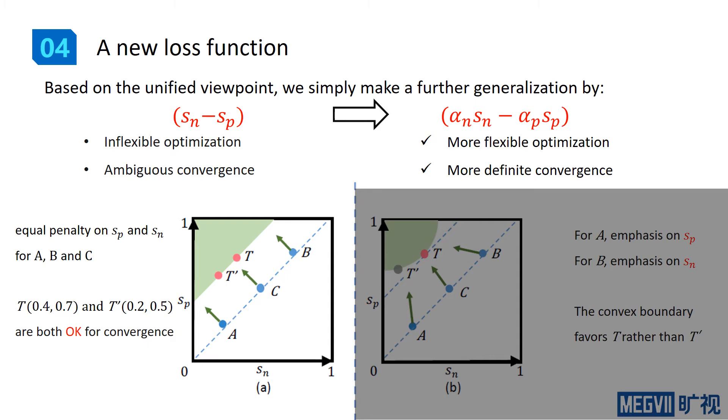Before convergence, the penalty on both s_p and s_n are restricted to be equal, which lacks flexibility. Upon convergence, any points on the line boundary are acceptable.